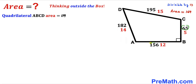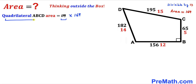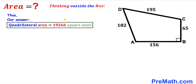However, our original side lengths were 65, 156, 182, and 195. We divided these values by 13, and 13 squared is 169. So we multiply 114 by 169 to get the true area of quadrilateral ABCD. This gives us 19,266 square units as our final answer.